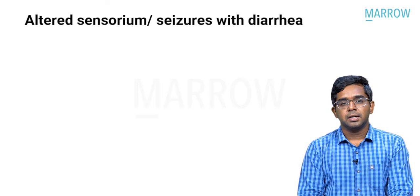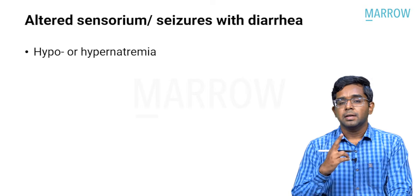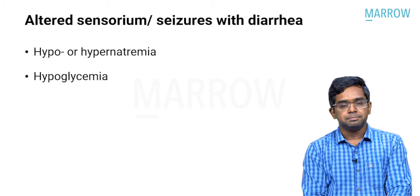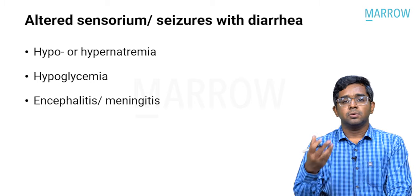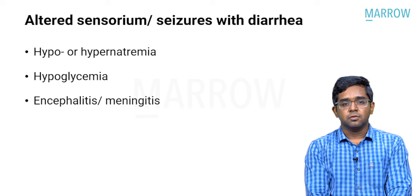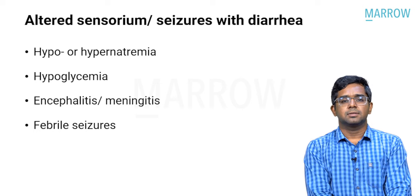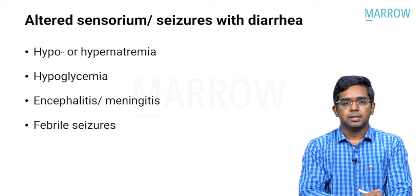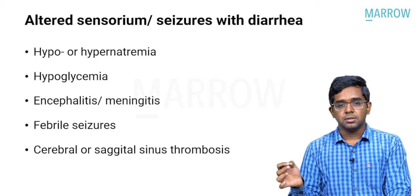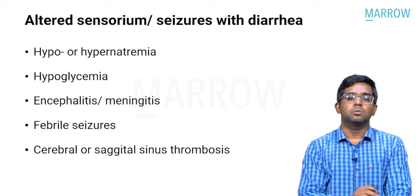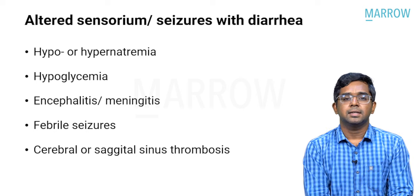The differentials to remember are: number 1 — electrolyte abnormality, usually hyponatremia or hypernatremia; number 2 — hypoglycemia; number 3 — encephalitis or meningitis, where the child would have signs of meningeal irritation and fever; number 4 — febrile seizures, which can also present with seizures in a child with diarrhea; and number 5 — cerebral or sagittal sinus thrombosis due to severe dehydration.